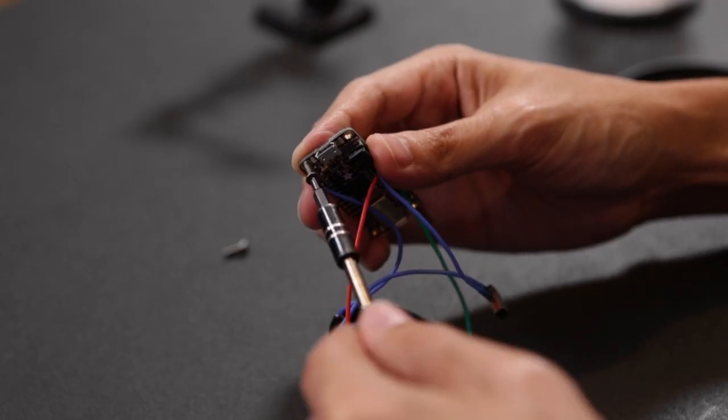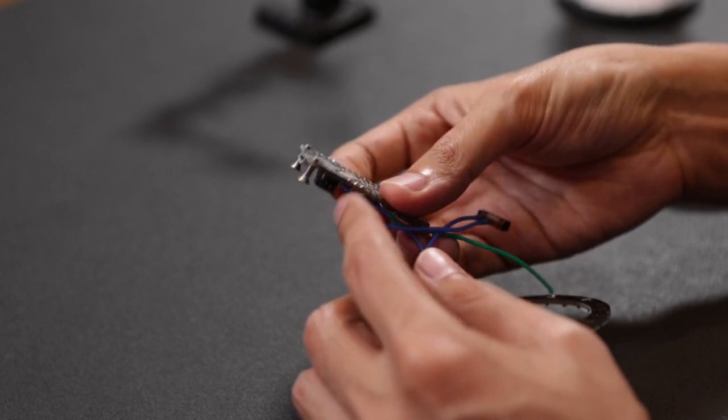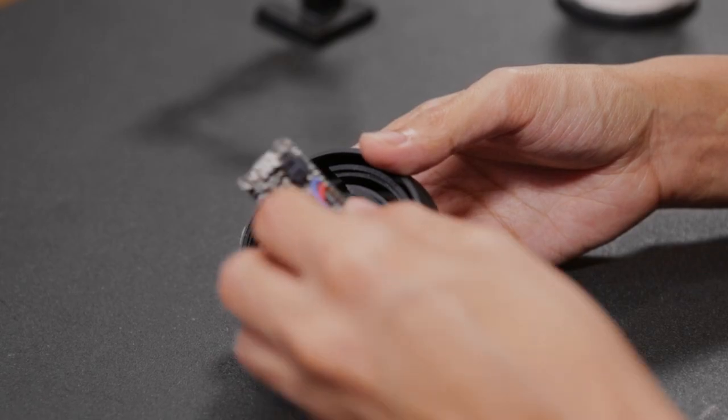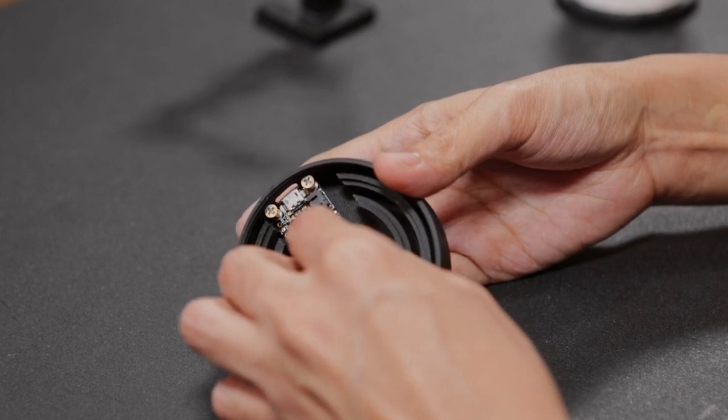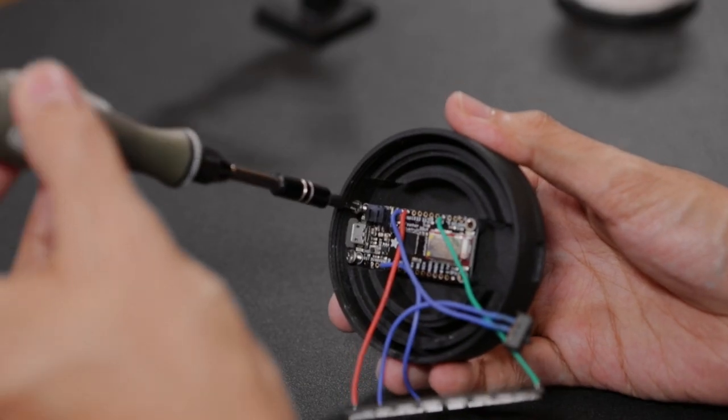Tap the two mounting holes on the Adafruit Feather using machine screws so that they barely poke through the bottom of the board. Next, insert the board and hold it in place, then fasten the screws into the standoffs with mounting holes.